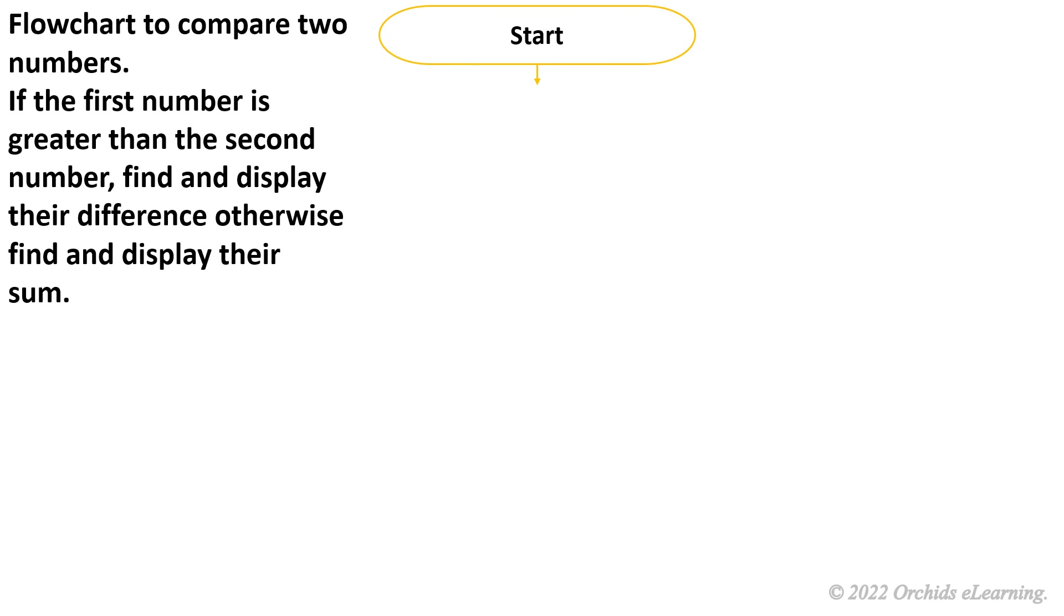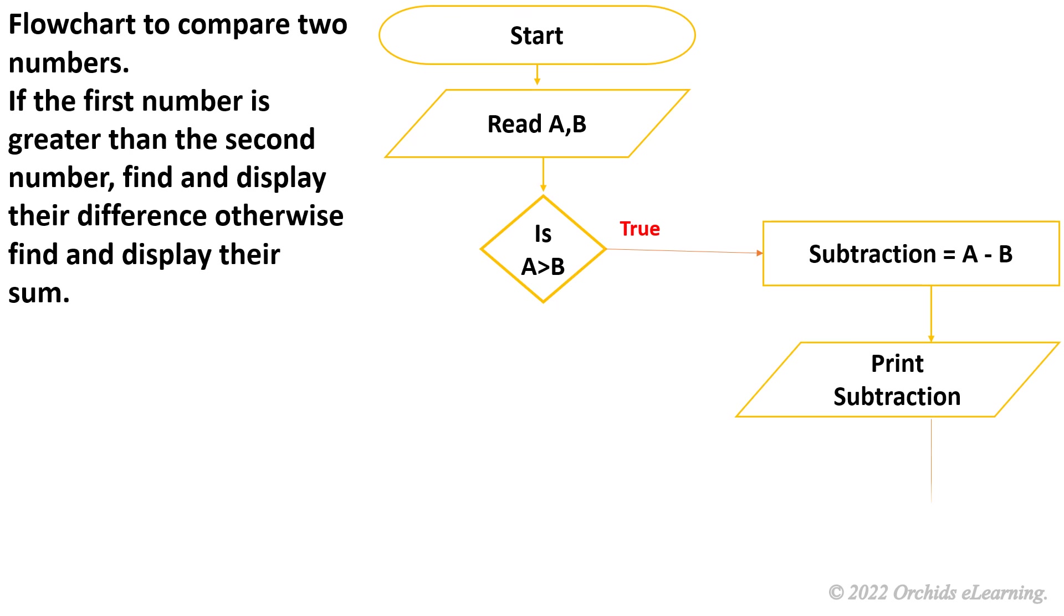Flow chart to compare two numbers. Start. Read A, B. Is A greater than B? If yes, subtract A minus B. Print subtraction. If A is not greater than B, add A plus B. Print addition. Stop.